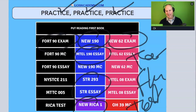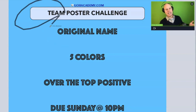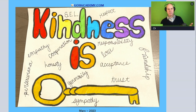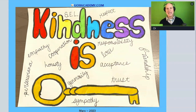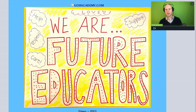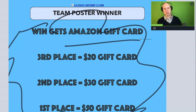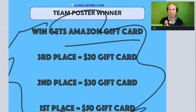If you've enjoyed this class and gotten something out of it, send in your team poster. Remember: original name, five colors, over the top positive. Send it in! Whoever sends in the best poster will get prizes — the top three posters will get Amazon gift cards. Share your poster with the team, because you are part of the team — yes, you — I want you to send in your poster.